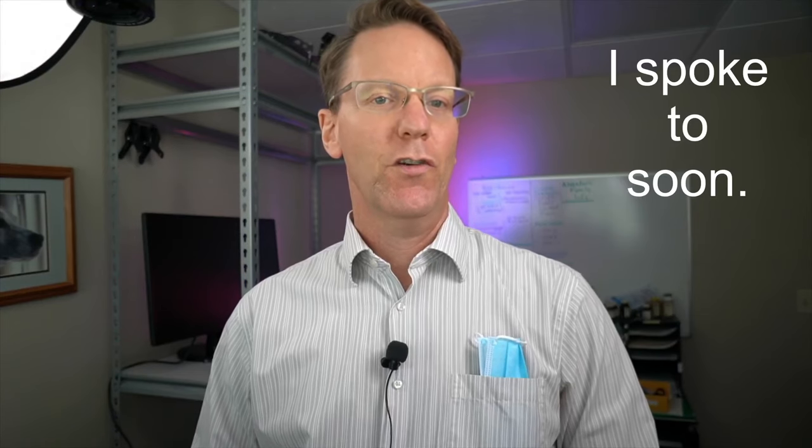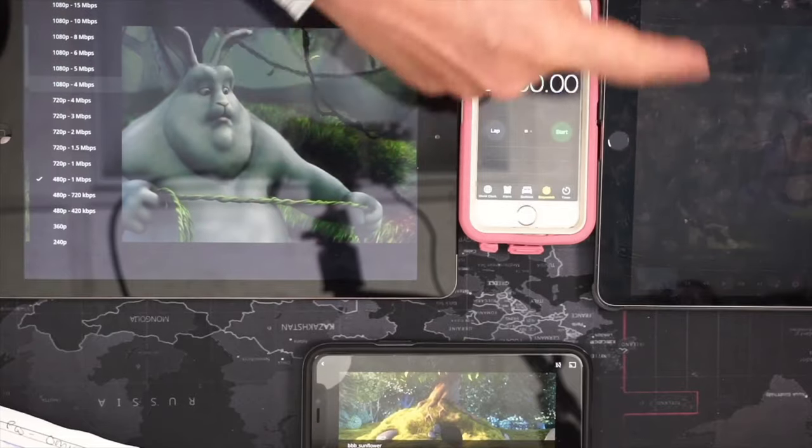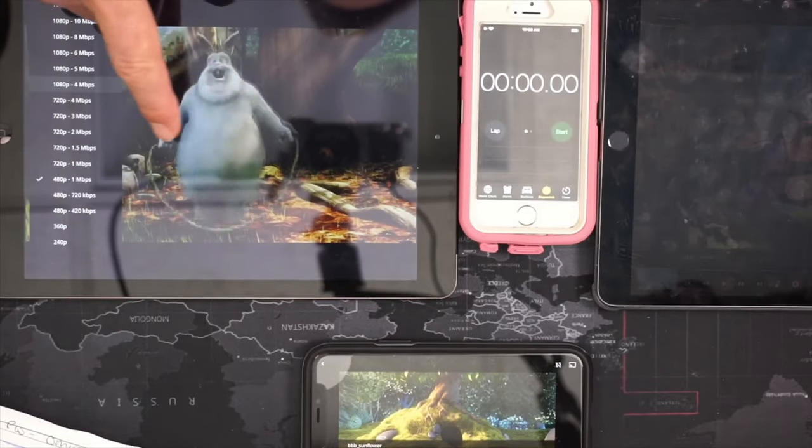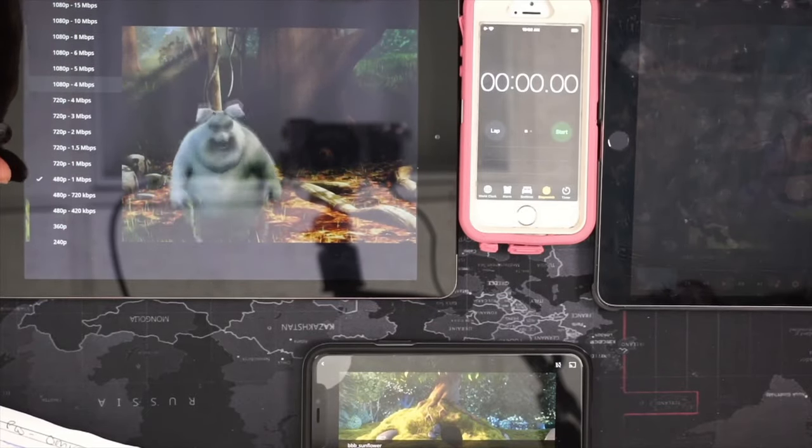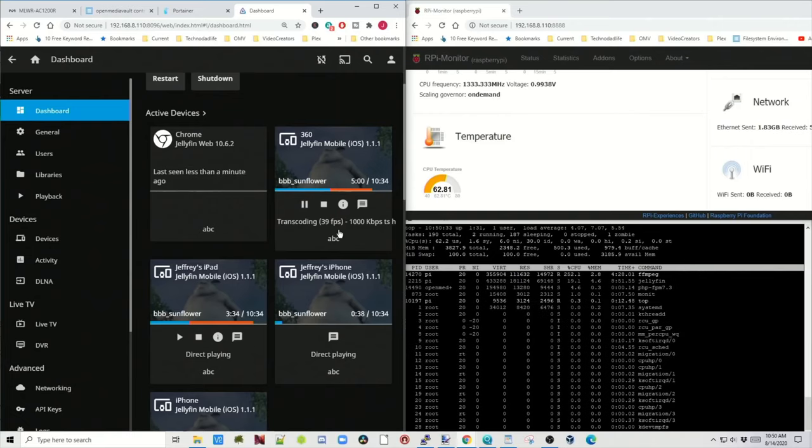So let's see how many we can do at 480p. We should be able to do two no problem. Let's see if we can do three. I've reset these two devices so they are on auto now. This one is at 480p. If we look at the desktop, it's transcoding now and these two are direct playing.